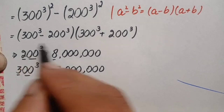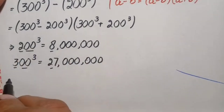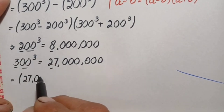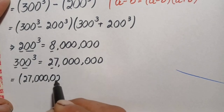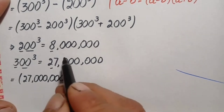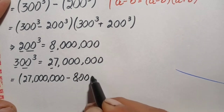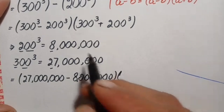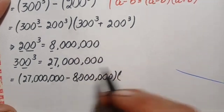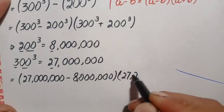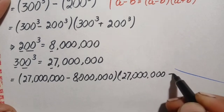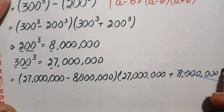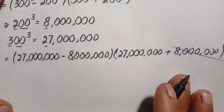Replacing the values: 300³ = 27 million and 200³ = 8 million. So we have (27 million - 8 million)(27 million + 8 million). Subtracting: 27 - 8 = 19, giving 19 million. Adding: 27 + 8 = 35, giving 35 million. We now need to multiply 19 million by 35 million without rough work or a calculator.